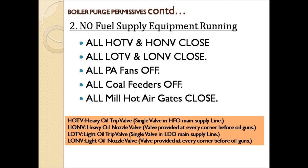To avoid that, all LUTV and LONV should be in closed condition. LUTV is the light oil trip valve, a single valve in the LDO main supply line. LONV is the light oil nozzle valve, provided at every corner before the oil guns. Similarly, all HUTV and HONV should be in closed condition. HUTV is the heavy oil trip valve, a single valve in the HFO main supply line. HONV is the heavy oil nozzle valve, provided at every corner before the oil guns. Apart from this, all PA fans should be off, all coal feeders off, and all mill hot air gates should be in the closed position.